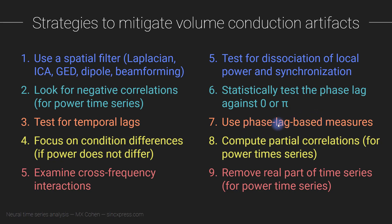You can statistically test the phase lag to see if it is significantly different from zero or pi. You can use phase lag-based measures instead of phase clustering-based synchronization measures — I will talk quite a bit about phase lag versus phase clustering measures later in this section. You can compute a partial correlation, which is appropriate for power time series: you partial out the variance due to a third electrode when measuring correlations between two electrodes, removing the volume conduction component. Finally, there are methods to remove the real part of the time series and focus on the imaginary part, which cannot be attributed to volume conduction.